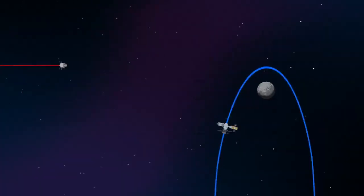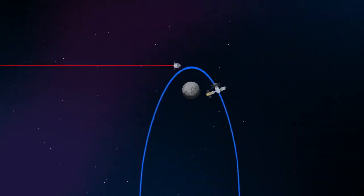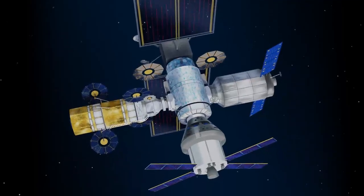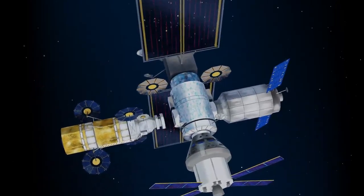Returning to our crew as they approach Gateway, the Orion must match the elliptical orbit of the station in order to successfully dock. Once on board, pre-selected crew members transfer to the lunar lander, while those assigned to Gateway remain on station.